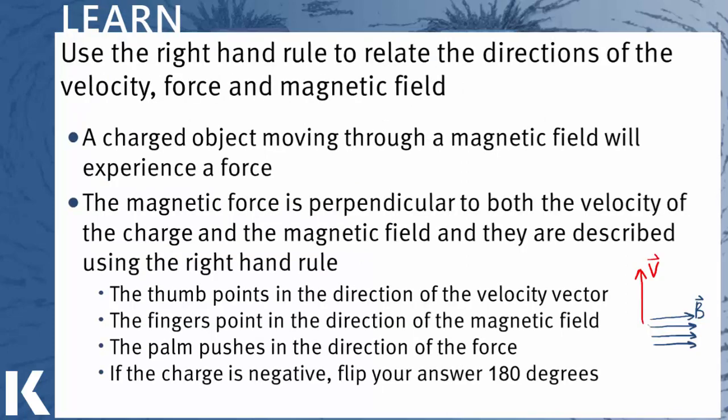The way you do it is you take your right hand and you put your thumb in the direction of velocity, your fingers in the direction of the magnetic field, and then your palm pushes in the direction of the force. One way you can remember this is that your thumb looks like a velocity vector, and your fingers look like field lines, and then your palm pushes in the direction of the force.